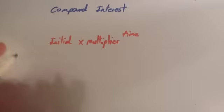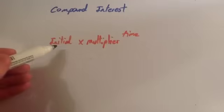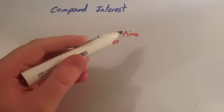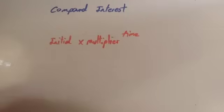In this video we're going to look at compound interest. Compound interest can be considered either by using this formula, which is initial multiply by multiplier to the power of time, or by doing repeated percentage increase or decrease depending on the question. Let's look at a couple of examples to see what I mean.